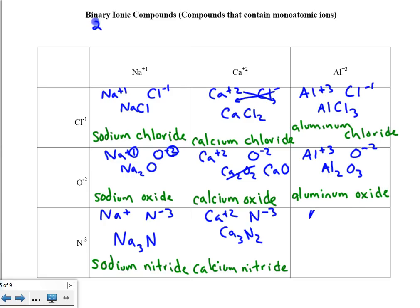The last one on this page is aluminum and nitride, crisscrossing. You'd think you should have the formula Al₃N₃, but this is reducible — it's a 1 to 1 ratio, so this is AlN. This would be called aluminum nitride.